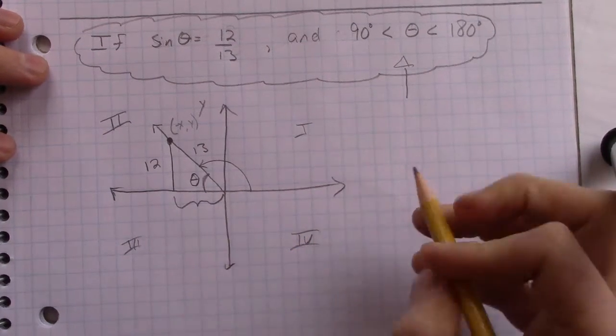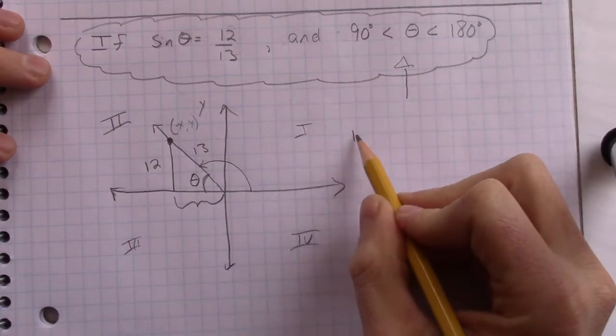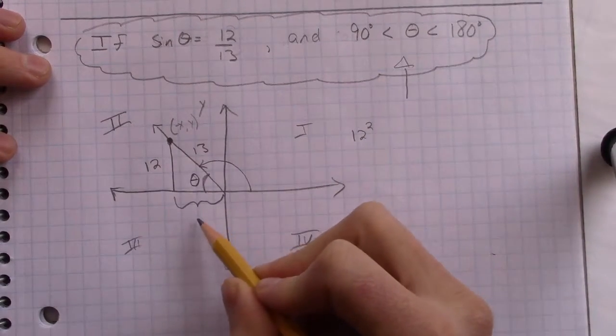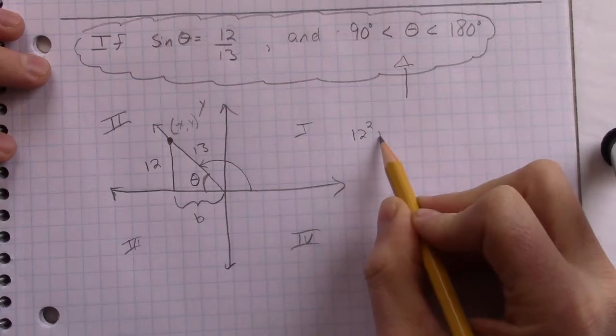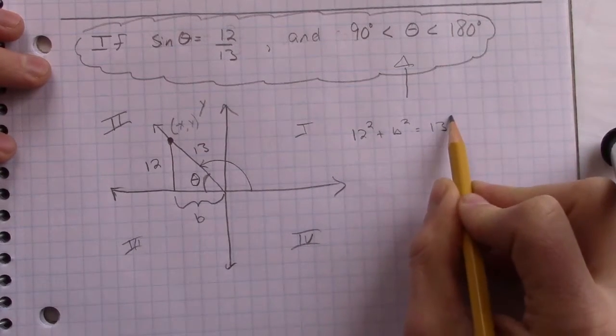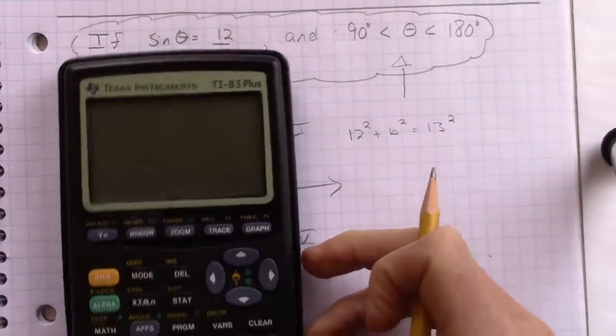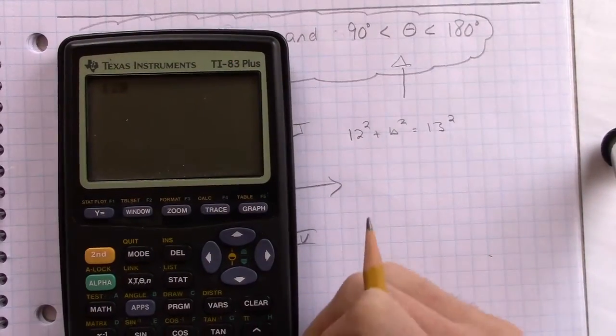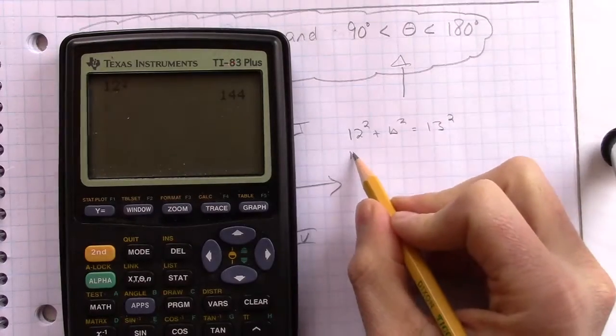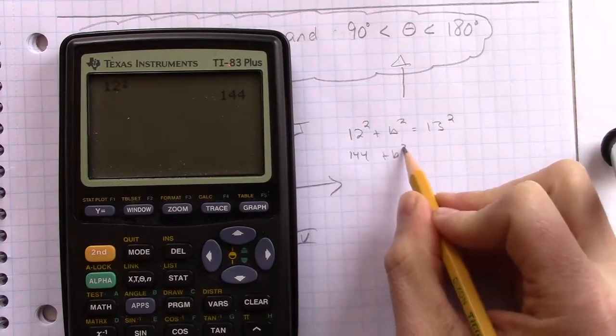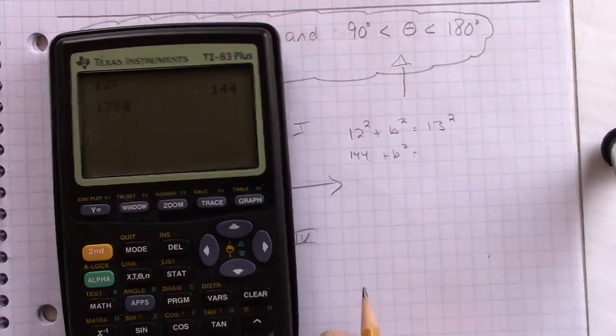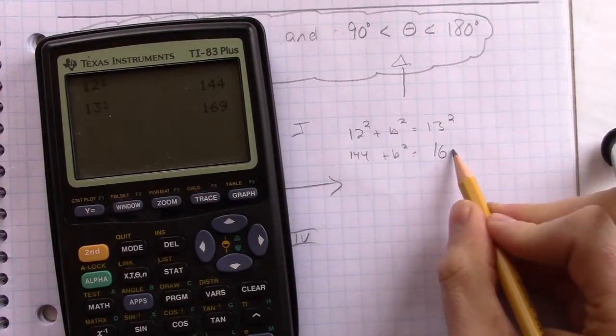So when I solve this, I want to make sure that this value ends up being negative. Now, how would I solve for that? Well, I'd use the Pythagorean theorem. I'd have 12 squared plus, I don't know, let's call this b, plus b squared equals 13 squared. So 12 squared, if we forget what 12 squared is, you just jump on your calculator. 12 squared, we got 144. 144 plus b squared equals 13 squared. If you forgot what that is, it's 169.